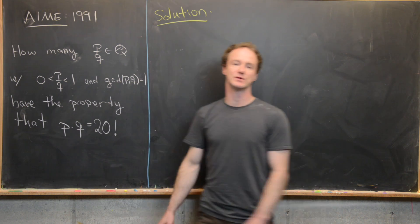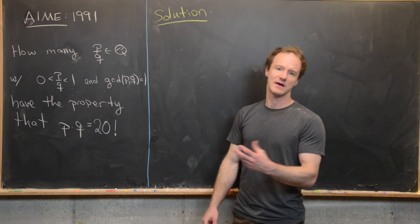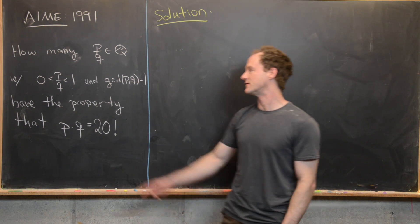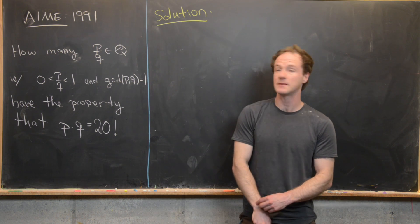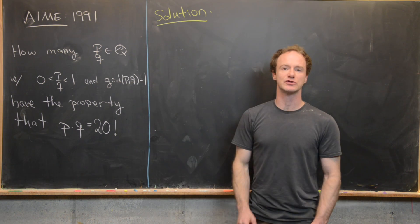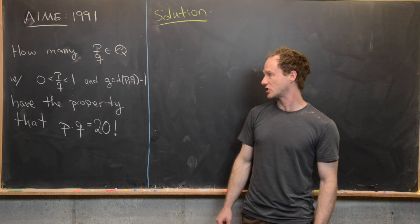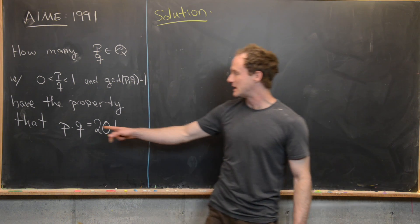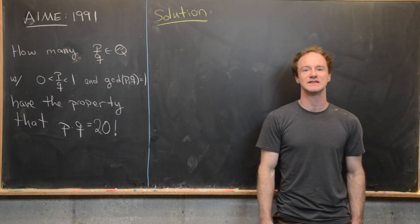First, P over Q is between 0 and 1, so that means P and Q are both positive and Q is going to be bigger than P. And the GCD of P and Q is equal to 1, so in other words, they're in lowest terms. And finally, P times Q equals 20 factorial.